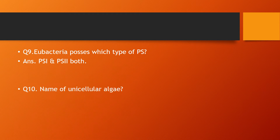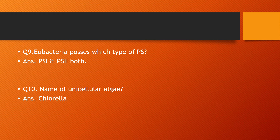Question number ten: name a unicellular alga — the answer is Chlorella. It is also a single cell protein-producing organism.